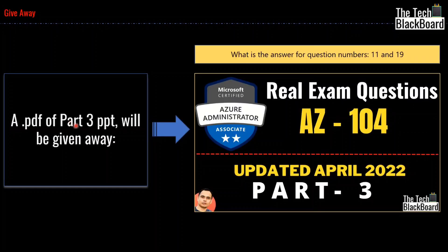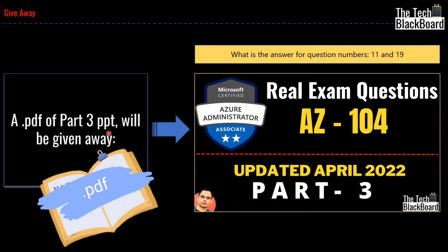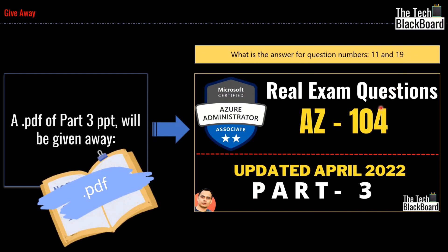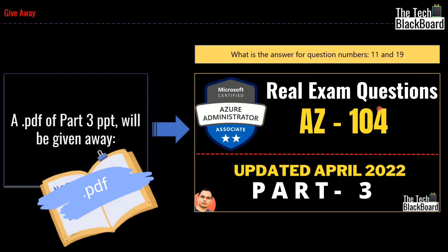In the giveaway section, a PDF version of the part 3 presentation is available. You can use this PDF to study offline. To receive it, provide the correct answers for question 11 and question 19, and the PDF with all 10 questions and answers from part 3 will be shared. Watch the video carefully until the end to answer both questions correctly and secure your PDF version.